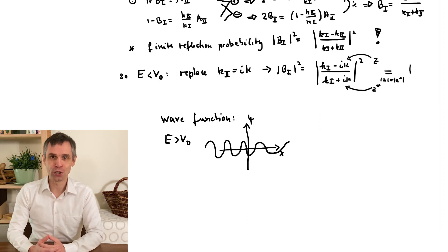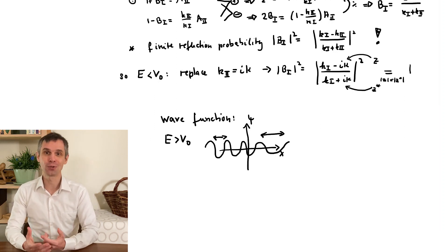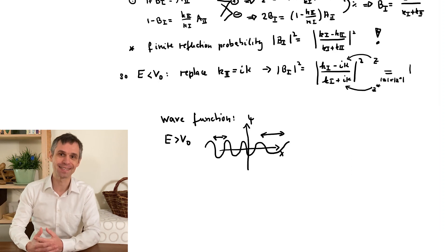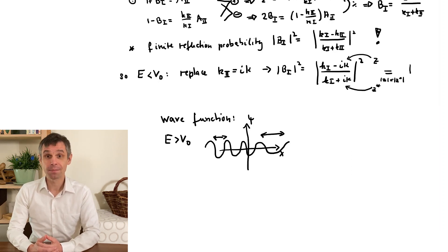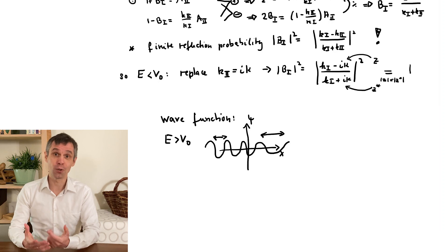Here, the particle has a finite chance to be transmitted or reflected, and this simply corresponds to the amplitudes of the different wave components.